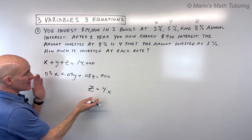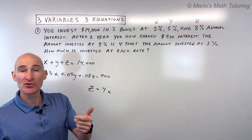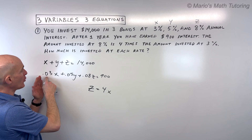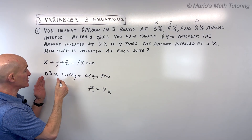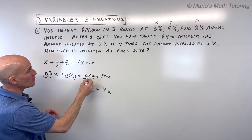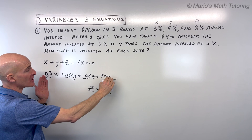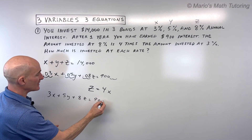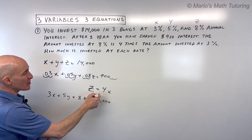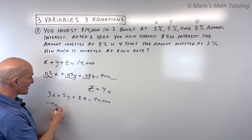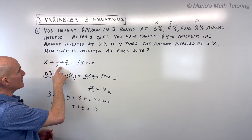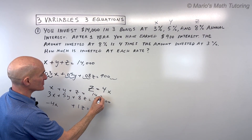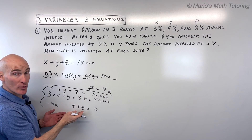With three variables, we need three equations, which we have. We can solve using substitution, elimination, or other methods. I'll multiply the second equation through by 100 to eliminate decimals, giving us 3X plus 5Y plus 8Z equals 90,000. Rearranging the third equation gives negative 4X plus Z equals 0. The first equation stays as X plus Y plus Z equals 14,000.